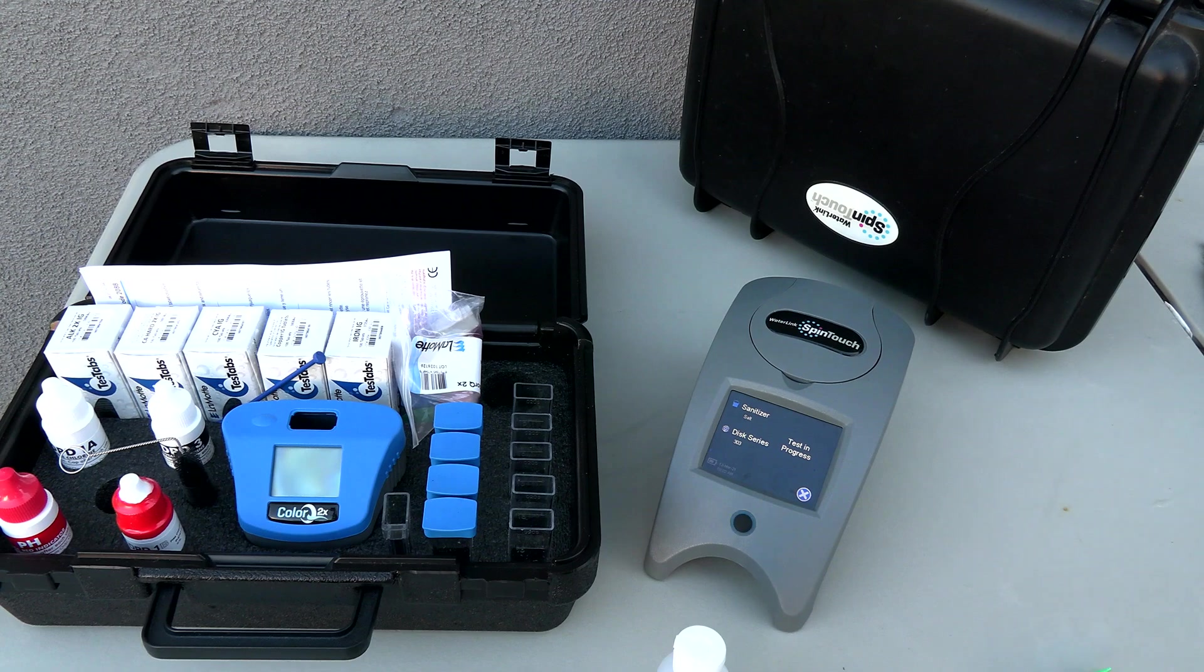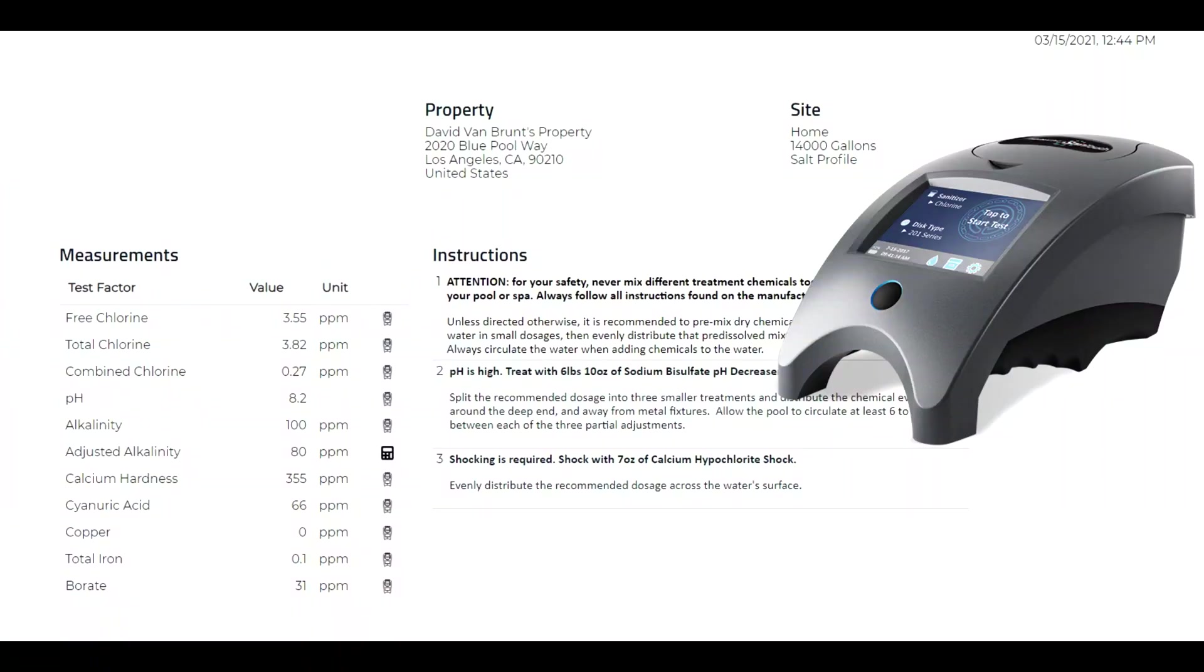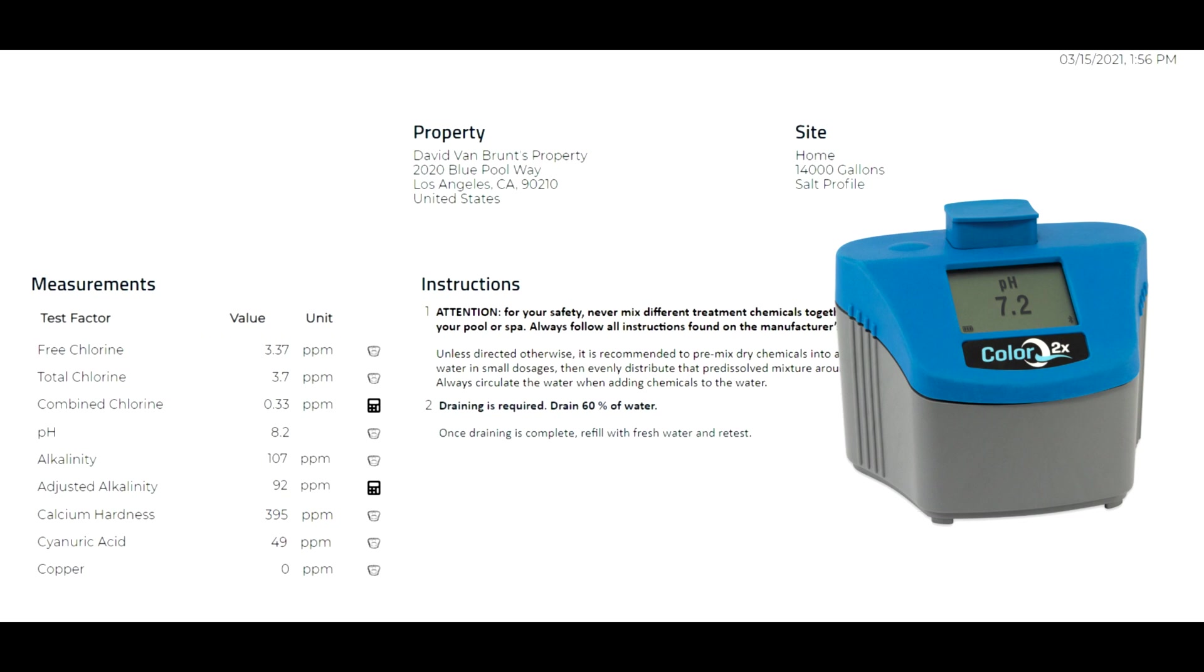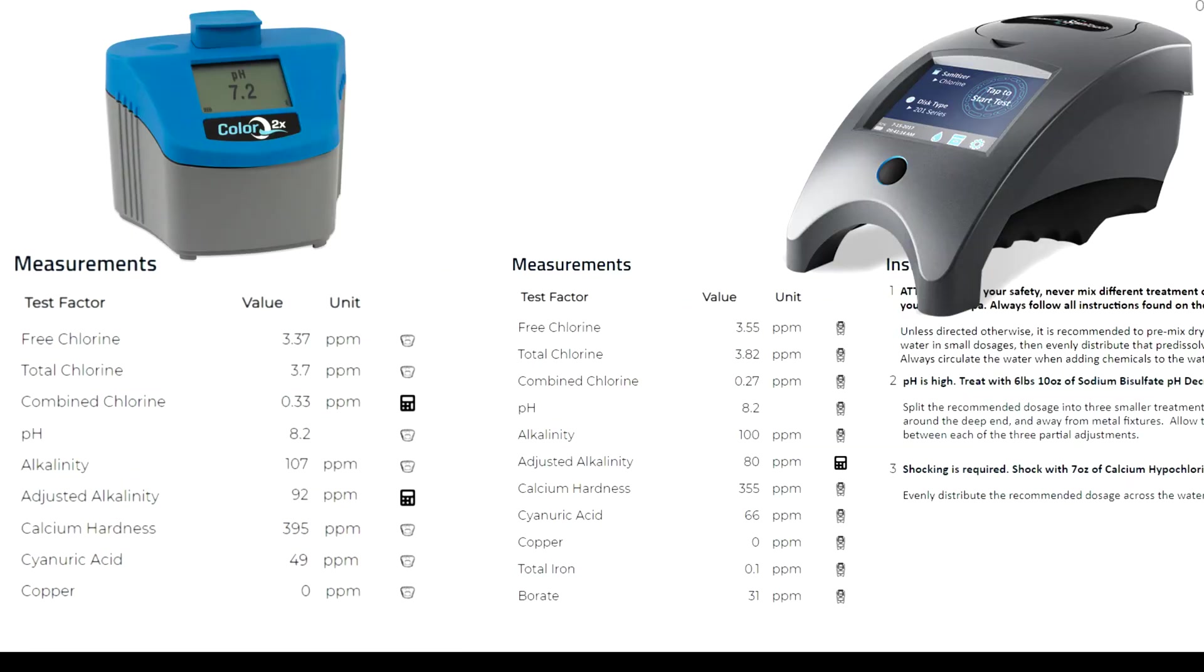Here are the results between the Spin Touch and the Color Q2X Pro 9. You can see that the results are pretty close together. I'm not sure why I didn't record the iron reading in the app. I'll have to look into that, but you can see that it did all these test factors here.